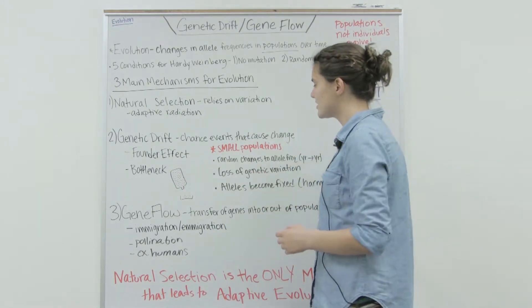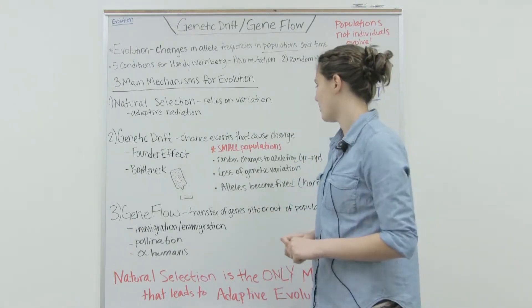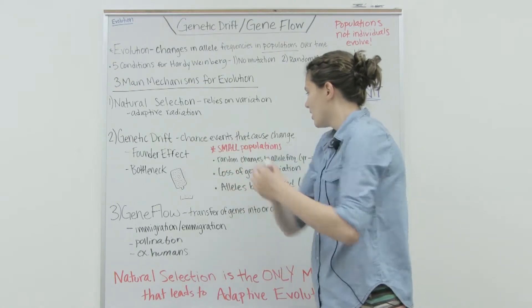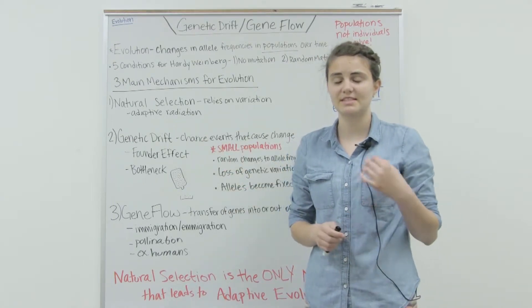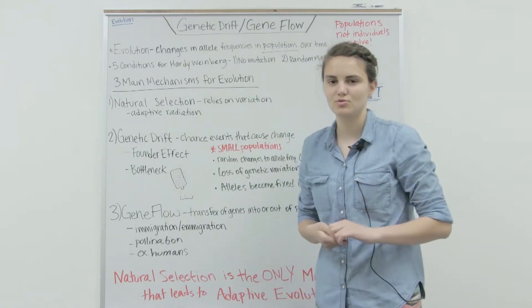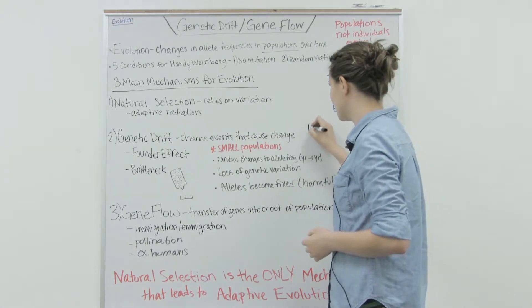Some things to keep in mind about genetic drift is that genetic drift is more effective on small populations because small populations are more susceptible to these chance events and changes.